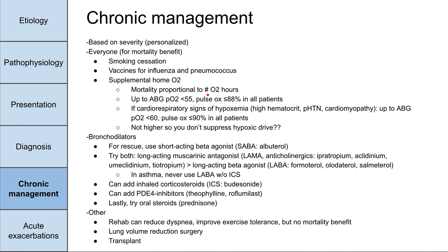In general, you want all patients with COPD to have a pulse ox of at least 88%, or a PO2 of at least 55 on arterial blood gas. If a patient is showing cardiorespiratory signs of hypoxemia — high hematocrit, pulmonary hypertension, or right ventricular hypertrophy — you want their PO2 to be at least 60, or pulse ox at least 90. So the minimum should be 88% unless they have right heart failure from hypoxemia, in which case target 90%.